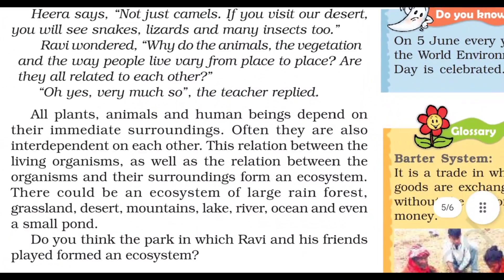You can also write this alternative paragraph: All plants, animals and human beings depend on their immediate surroundings. Often, they are also interdependent on each other. This relation between the living organisms, as well as the relation between the organisms and their surroundings, forms an ecosystem. There could be an ecosystem of a large rainforest, grassland, desert, mountains, lake, river, ocean, and even a small pond. You can write either of these definitions.